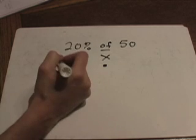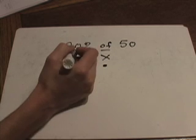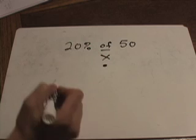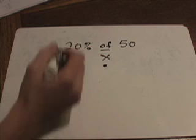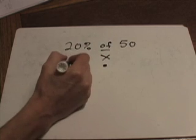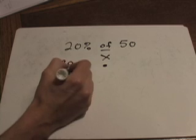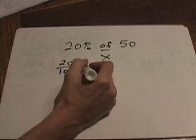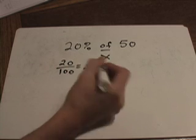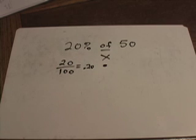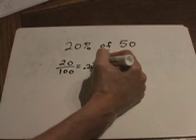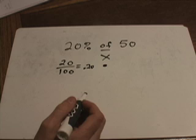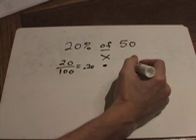20 percent means 20 out of a hundred. The way I remember that is there are two little zeros in the percent sign and two zeros in a hundred. So 20 percent is the same thing as 20 out of a hundred, which can also be written as 20 hundredths. We're trying to find what 20 hundredths times 50 is.